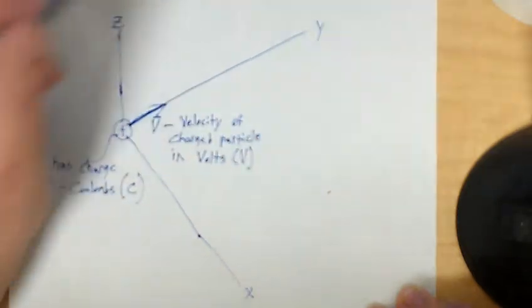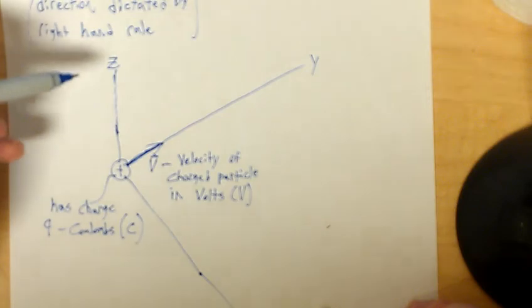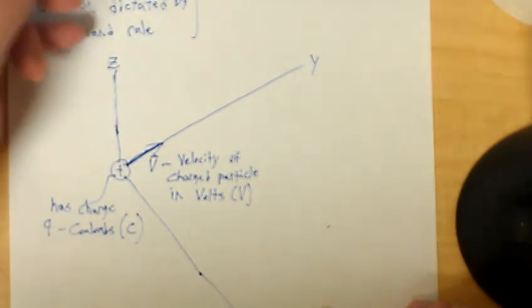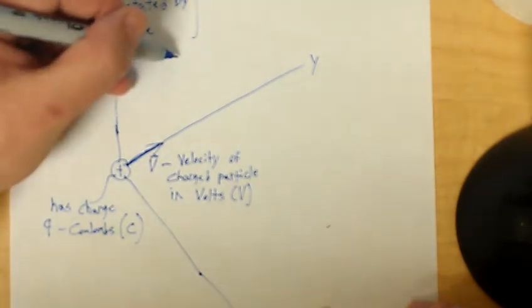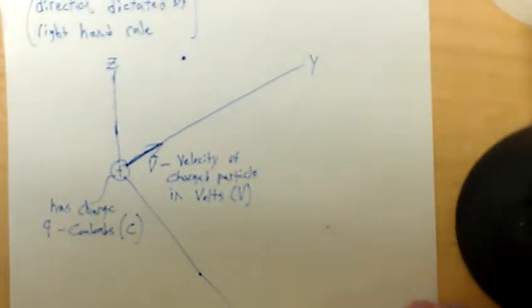And to find R and sine theta, we need a point. A point from which we're trying to find the magnetic field given by the charge.